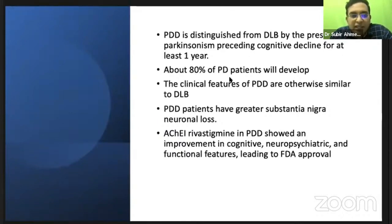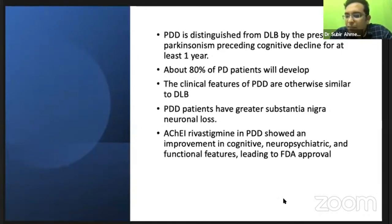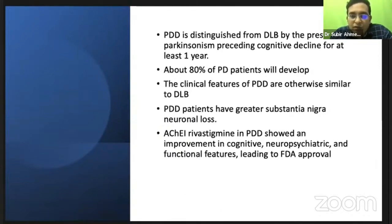As we know, 80% of Parkinson's disease will develop dementia. FDA has approved rivastigmine — not donepezil — as the drug of choice for Parkinson's disease dementia. This is taken from Bradley.